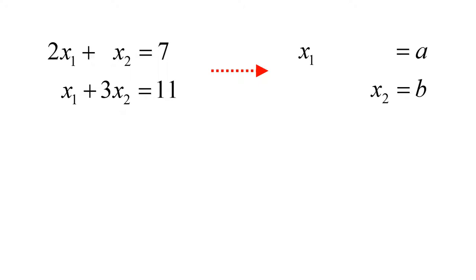To use the Gauss-Jordan elimination, the first step is to keep only the important information of the system of linear equations. There are two important pieces of information we need to keep. First, it is the coefficients — the numbers sitting in front of the unknowns. If you do not have any, it means you have 1. Here we have 2, 1, 1, and 3.